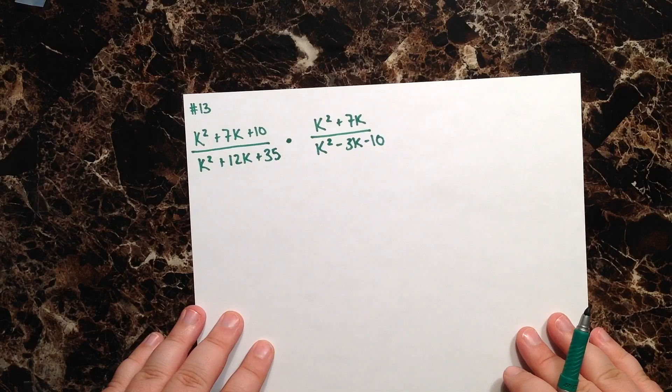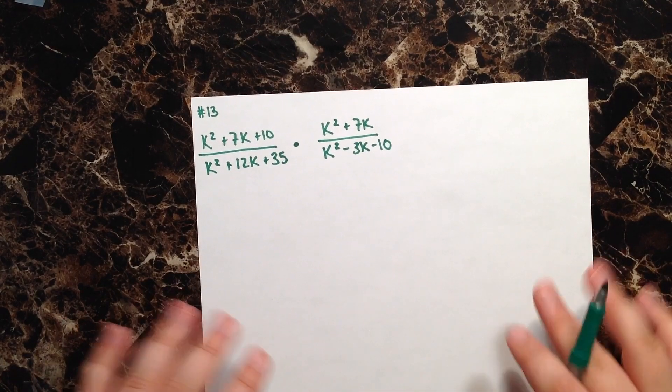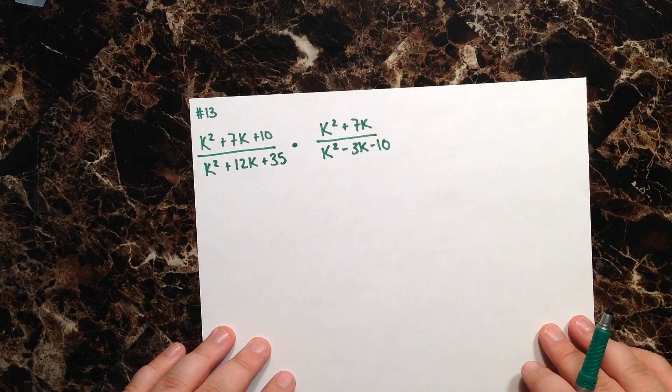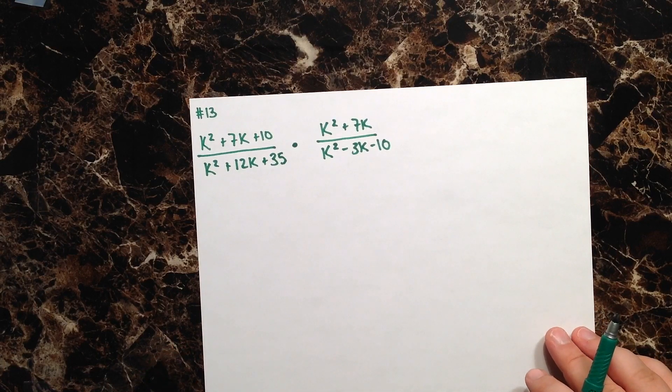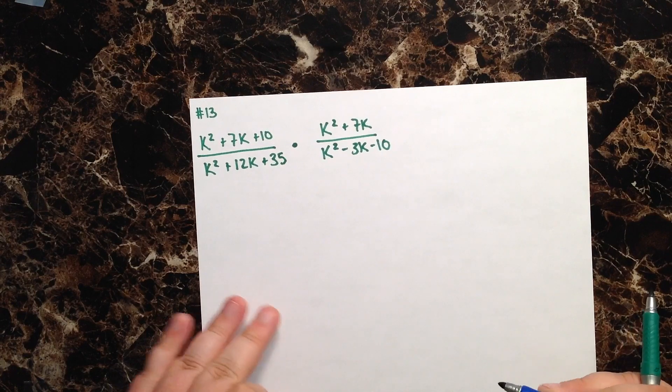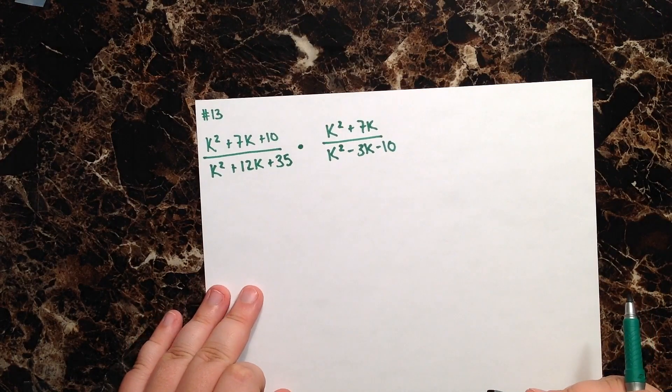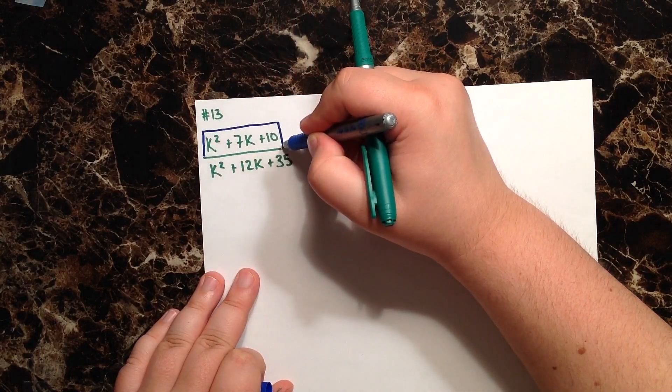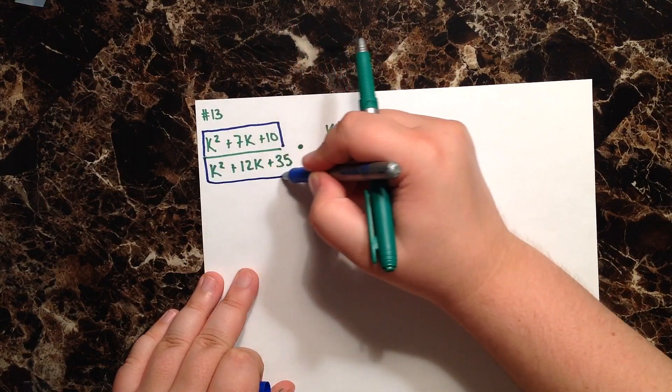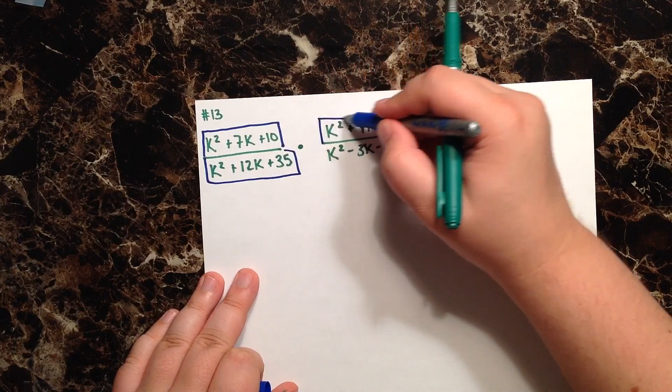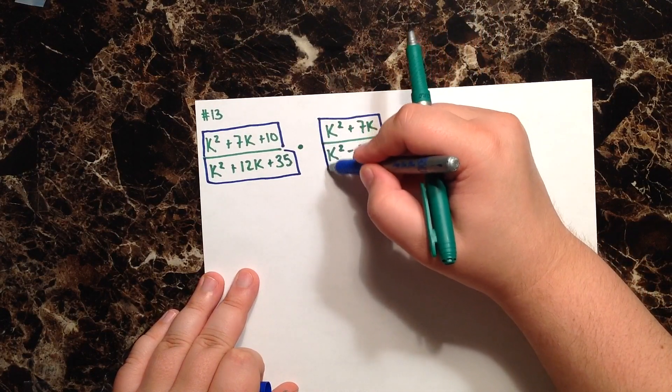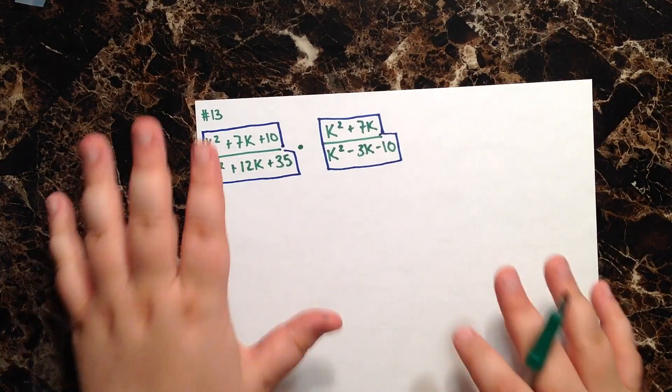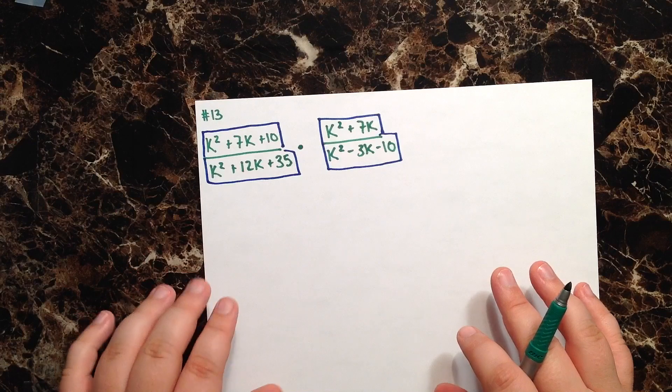At first glance this definitely seems like a complicated problem, but let's break it down into steps. The first thing I would recommend to simplifying this whole problem would be to treat each and every one of these trinomials and binomials as a separate problem. So each numerator, each denominator, just focus on one at a time so you're not overwhelmed.